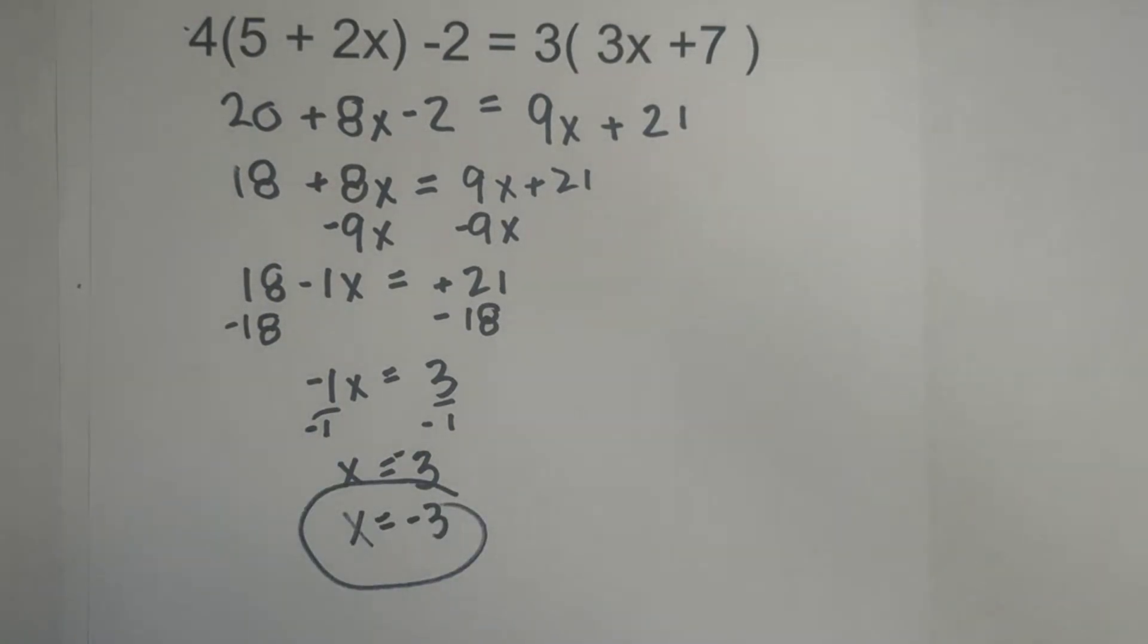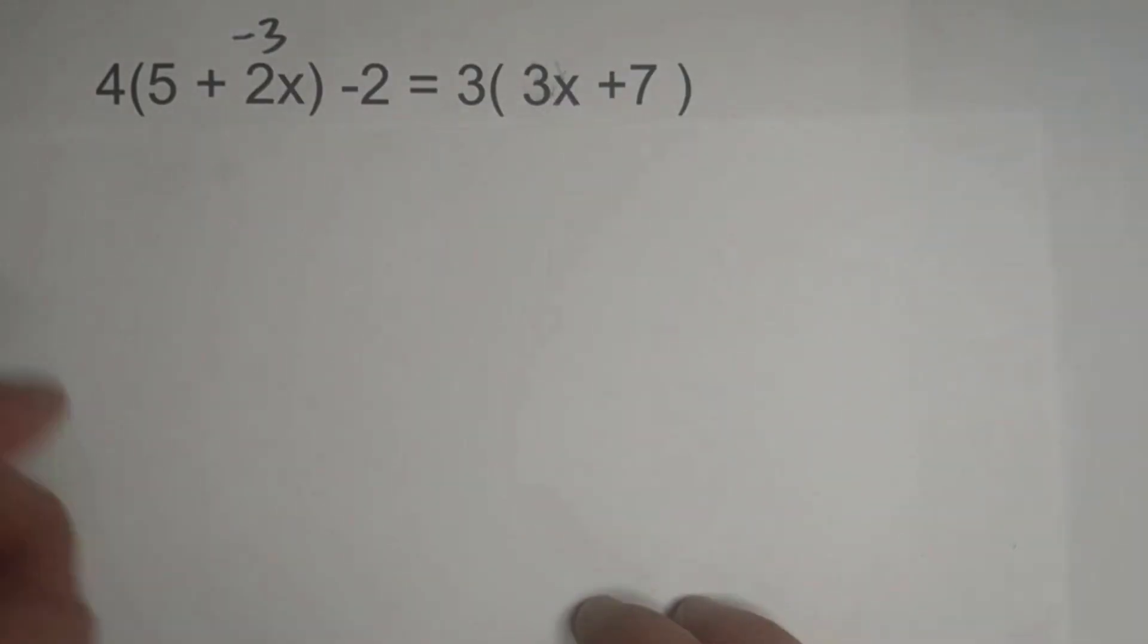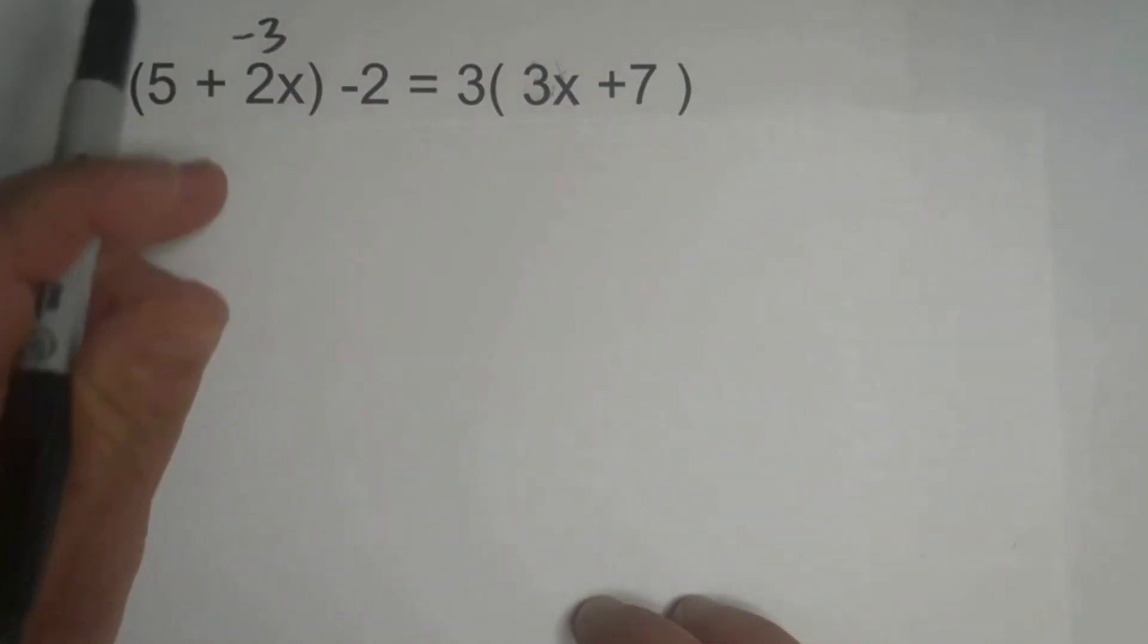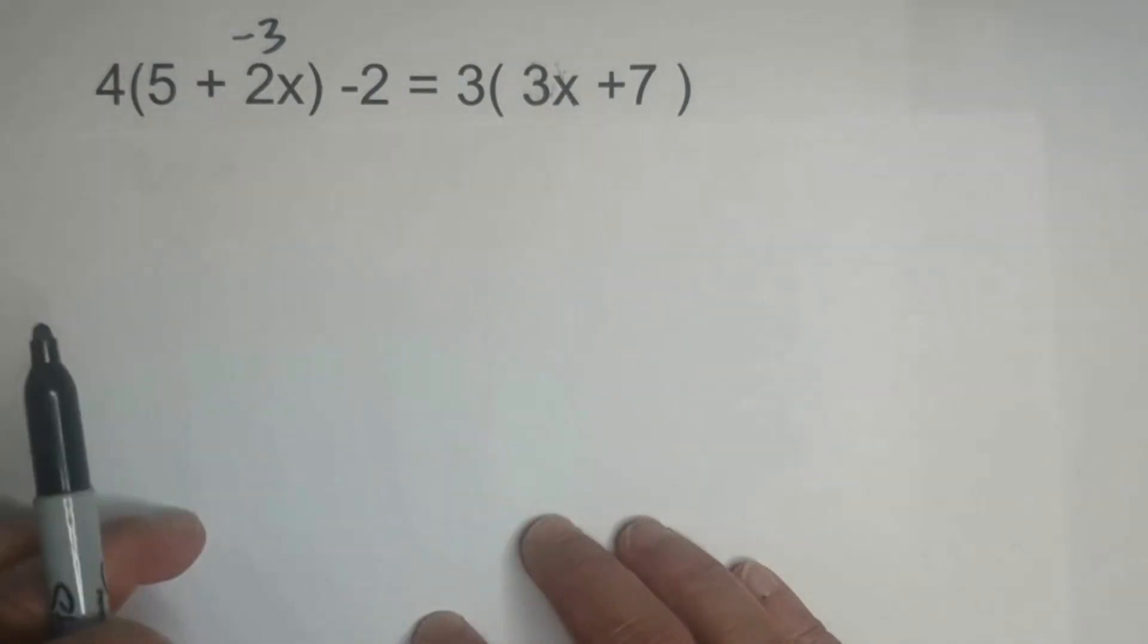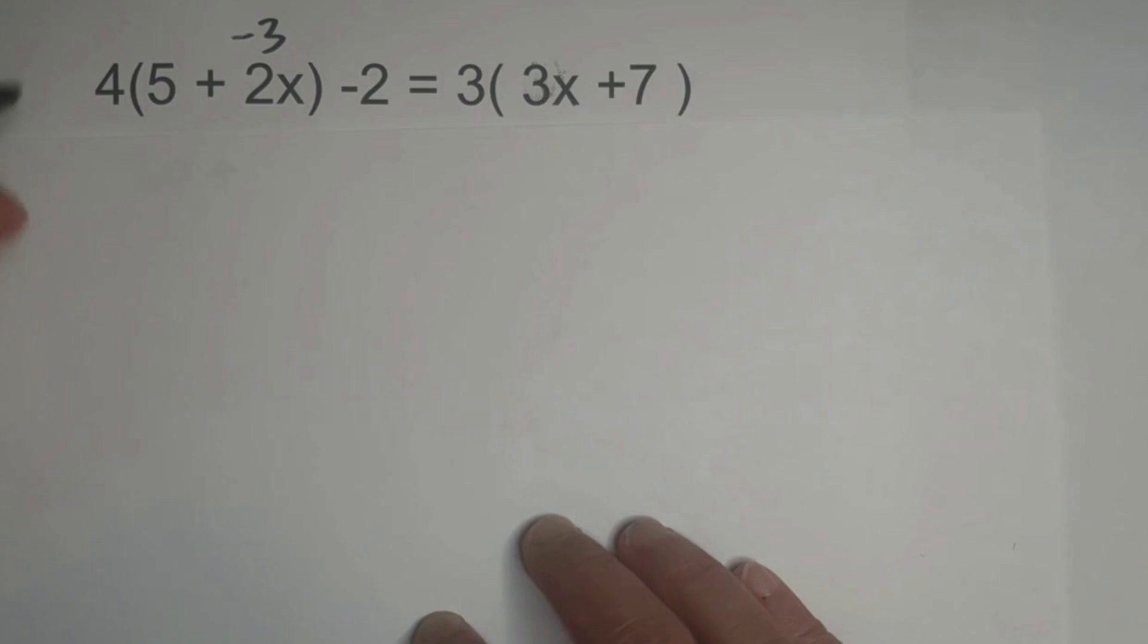Now, let's check our work. Let's go ahead and check our answer of negative 3, and we're going to distribute, then we're going to combine like terms, and the left and the right should equal. So let's first do this, 4 times 5 plus 2 times a negative 3 is,